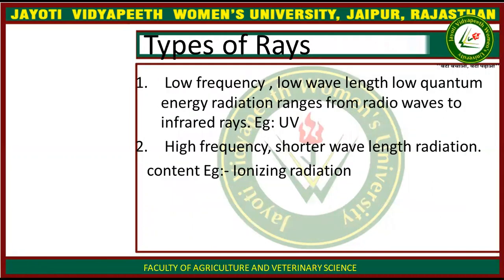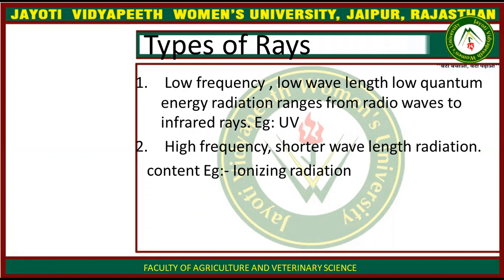Now we will talk about the types of rays which are used. Generally, there are two types: first, low frequency, and second, high frequency. Low frequency means low wavelength and low energy radiation — an example of this is ultraviolet. High frequency means shorter wavelength and higher energy radiation — an example of this is ionizing radiation.